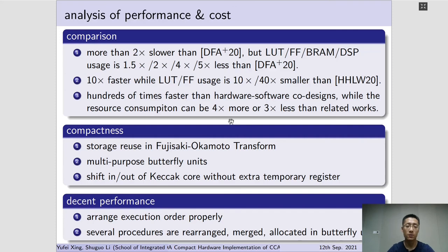The compactness comes from mainly three aspects. The first is storage reuse as aforementioned in Fujisaki Okamoto Transform and proper arrangement of execution order in Kyber, such that most intermediate results are consumed just after they are generated. And pseudorandom bits generation follows the just-in-time strategy. The second is two multipurpose butterfly units are adopted and can support all NTT-related calculations in Kyber, making full use of the multipliers.